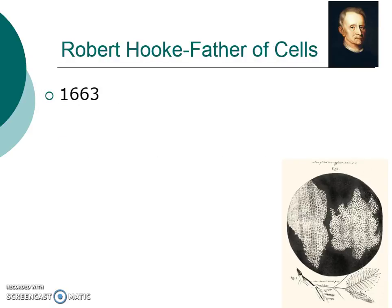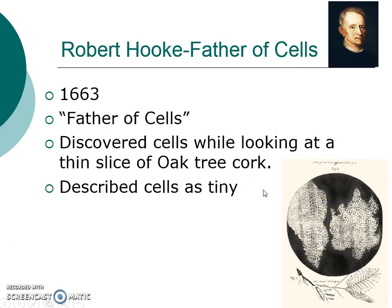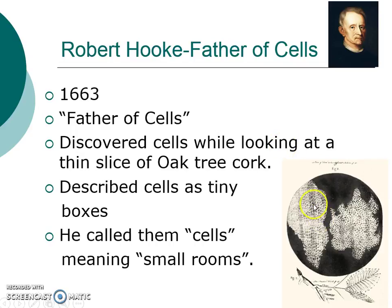Then, in 1663, came along a guy by the name of Robert Hooke. He's been known ever since as the father of cells, because he's the one who first saw cells. He discovered them while looking at a thin slice of oak tree cork, which you can see right there — that's what he saw under his microscope. He described cells as tiny boxes, and those tiny boxes is what he called cells, meaning small little rooms. You can kind of see those little boxes and small rooms that he first discovered.